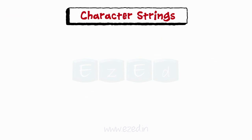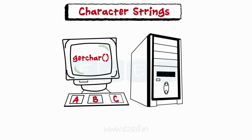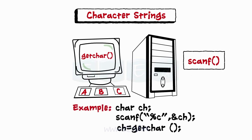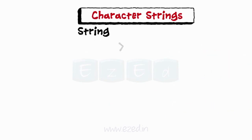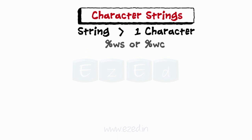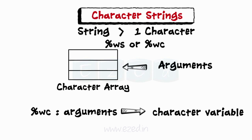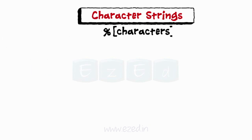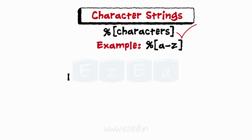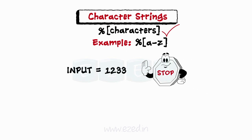Let us learn to input a character string. As we have learned to input a character using the getChar function, we can also do the same using the scanf function. If we want to input a string having more than one character, the specification used is %s. The corresponding argument should be a pointer to a character array. %wc should be used when the argument is a pointer to a character variable. We can use %[chars] to read characters; it specifies that only characters specified within the brackets are permissible. If the input string consists of characters other than those specified, then the input operation would be terminated.